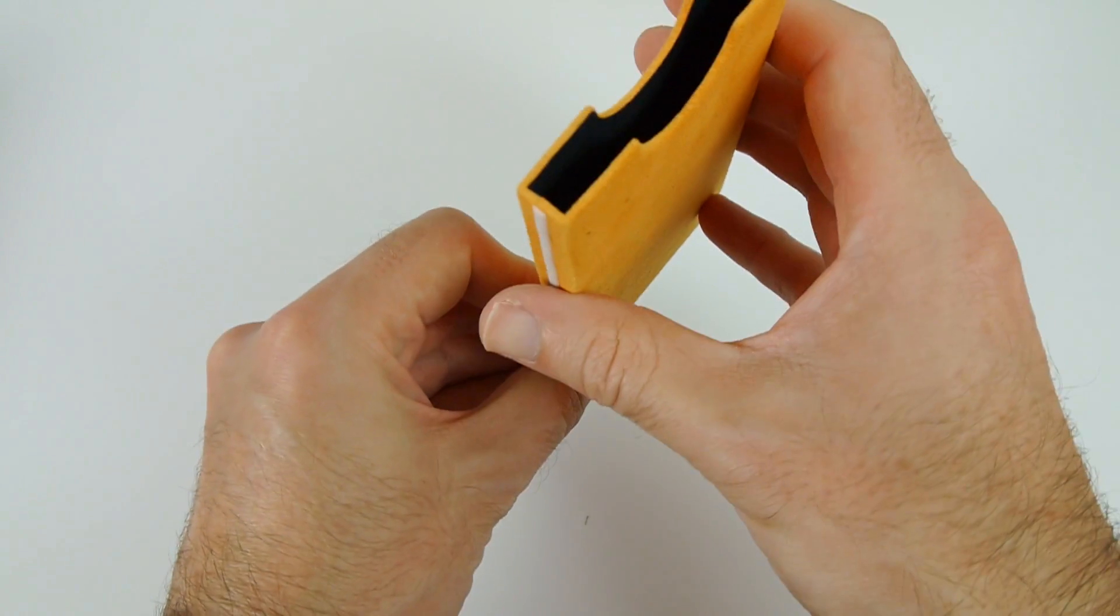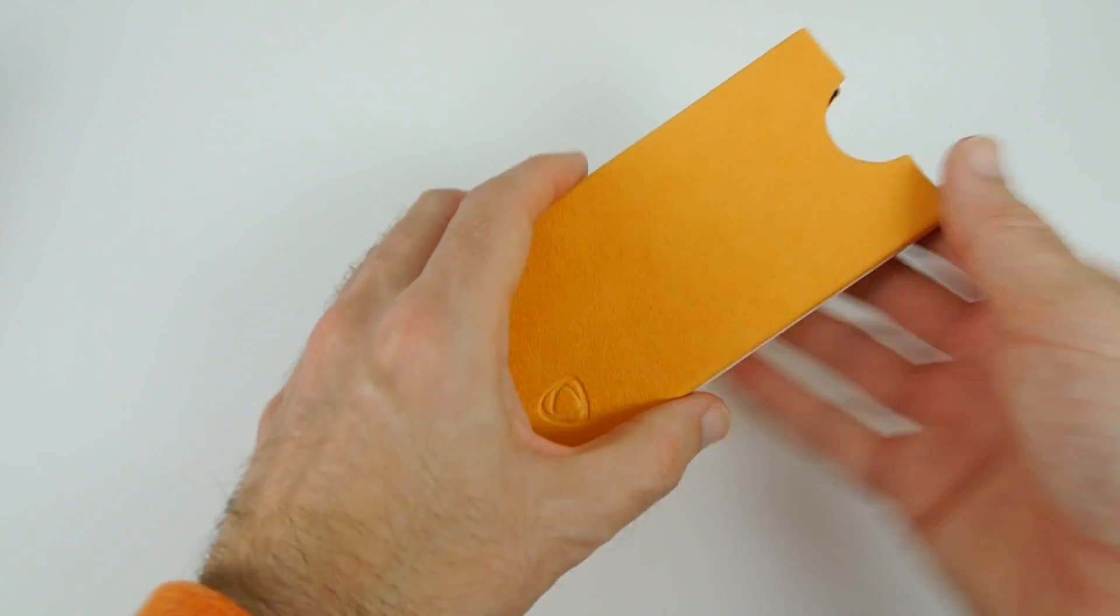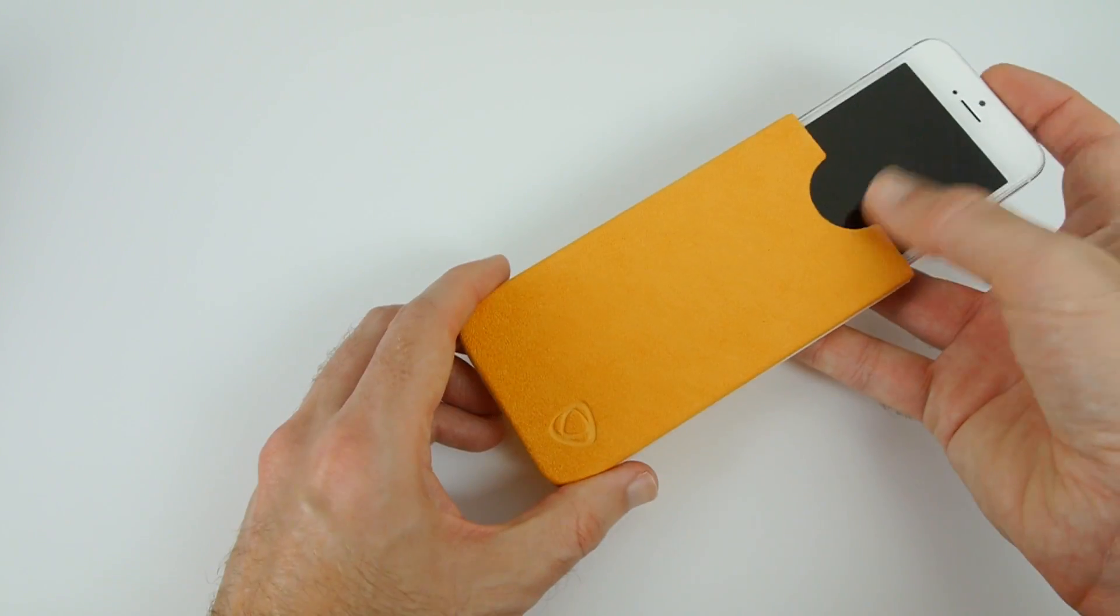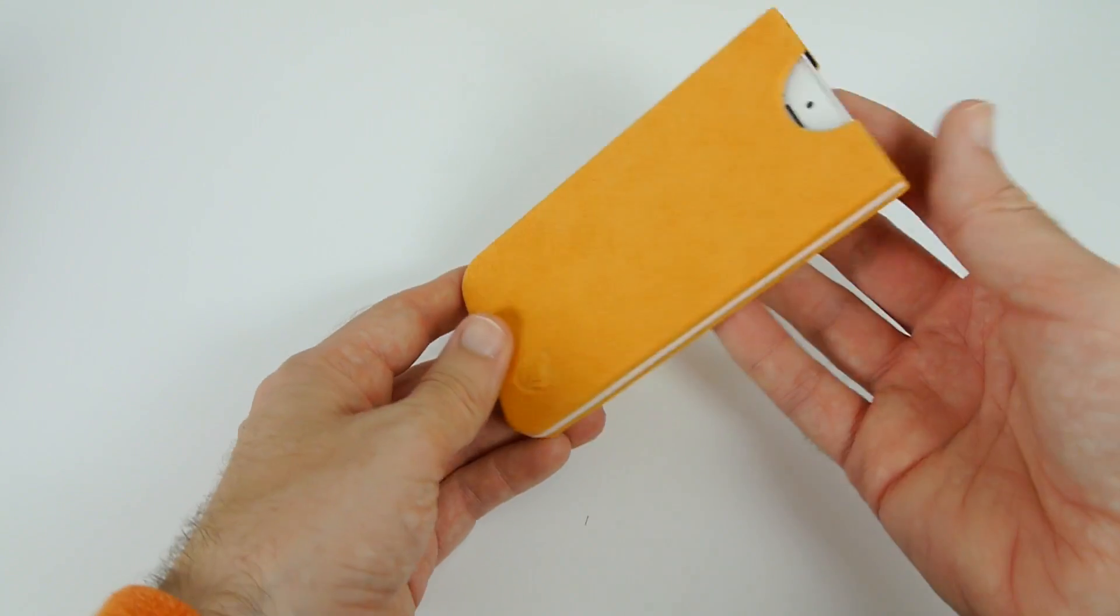So let's have a look what this looks like with the iPhone 5S in it. And it's a very simple case. We're just going to slide the iPhone down into the case like so. Very, very simple.